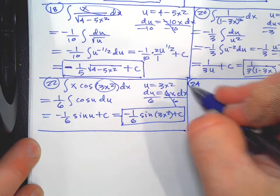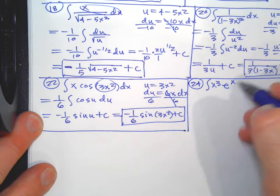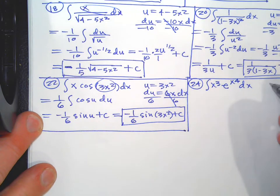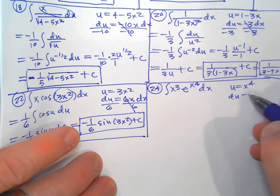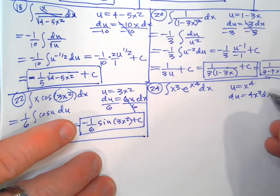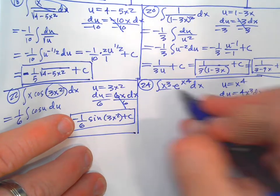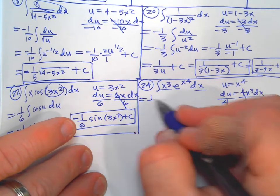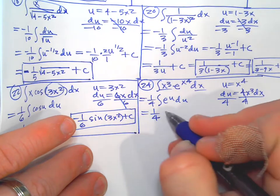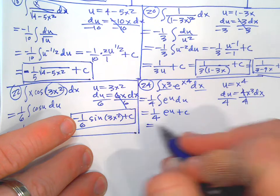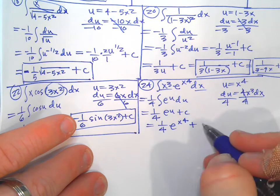Problem 24 is the integral of x³·e^(x⁴) dx. Let u equal x⁴, du equals 4x³ dx. We don't want the four but x³ dx is perfect, so it's one-fourth times the integral of e^u du. The anti-derivative of e^u is e^u plus C. Final answer: one-fourth e^(x⁴) plus C.